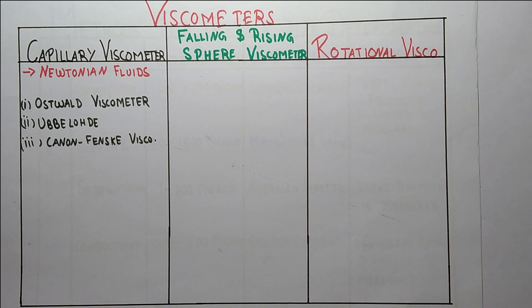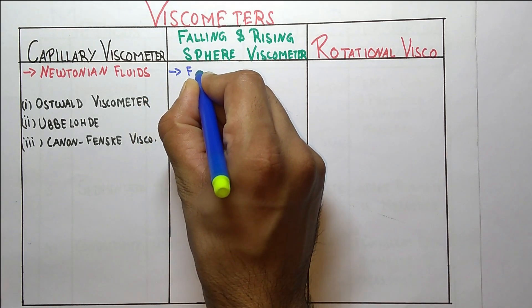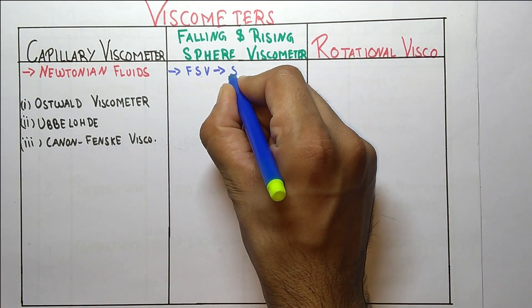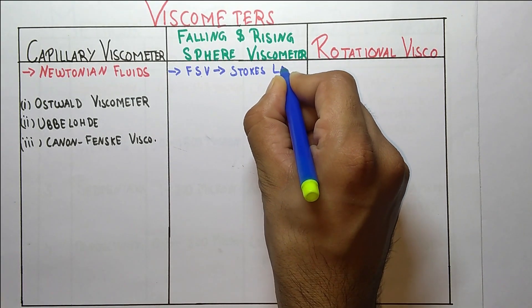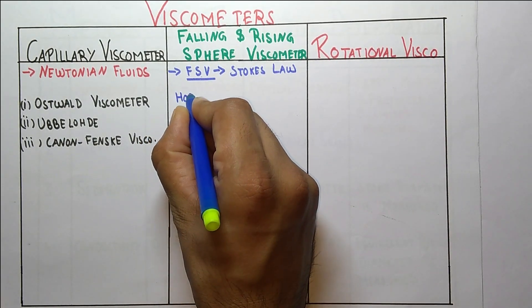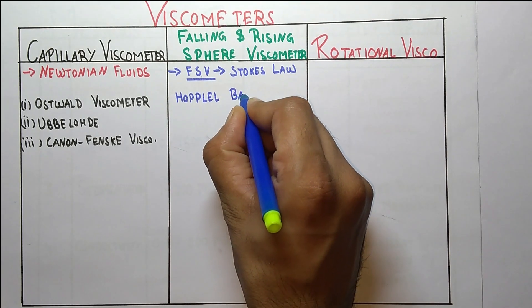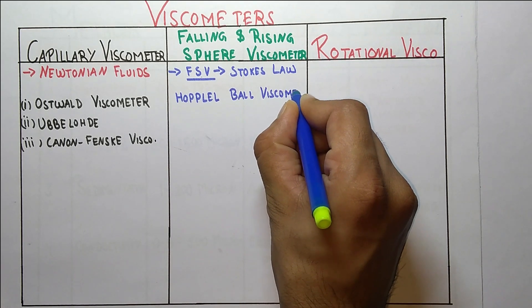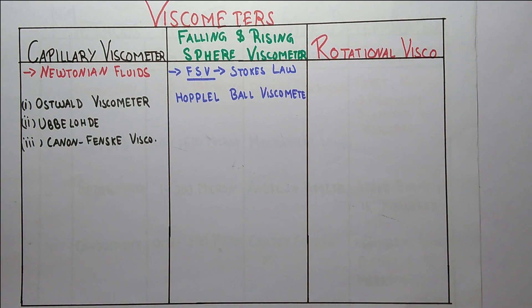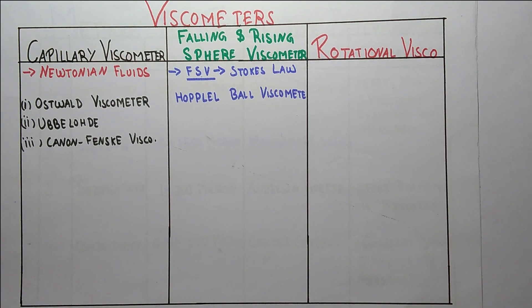The falling sphere viscometer is based on Stokes' law. The example of the falling sphere viscometer is the Hoppler ball viscometer.